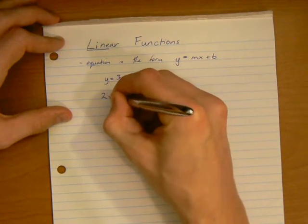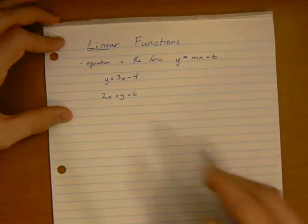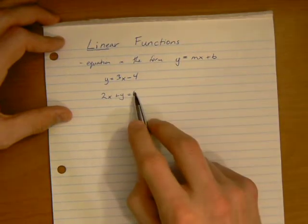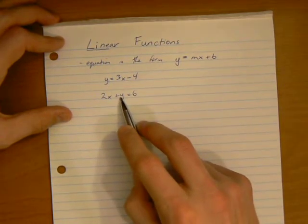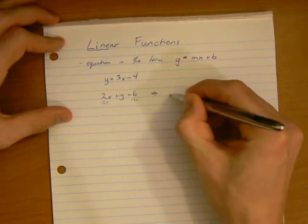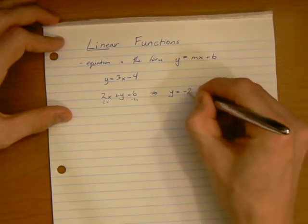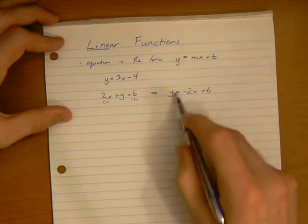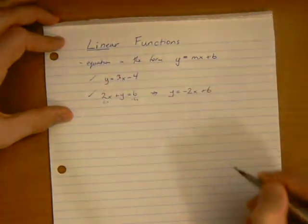What about 2x plus y equal to 6? Well, it's not in this format, but can we convert it? Yeah, we can. We can solve for the y here. If we subtract 2x from each side, we can change that into y is equal to negative 2x plus 6, same format. Good. So, these are both linear functions.